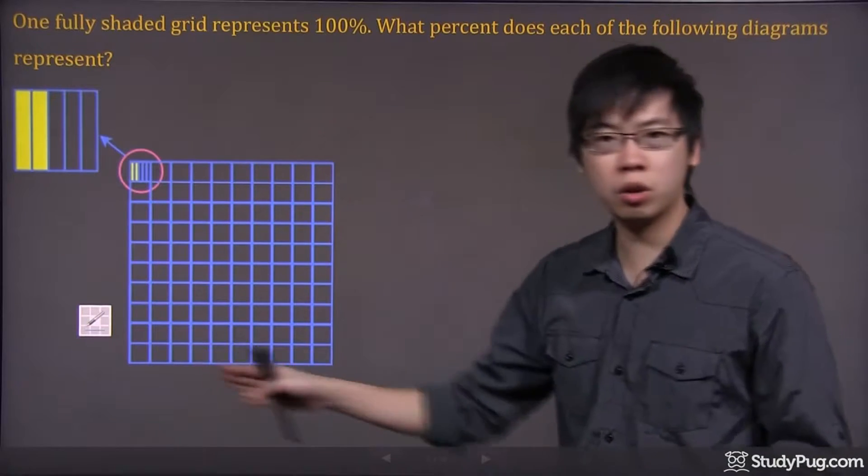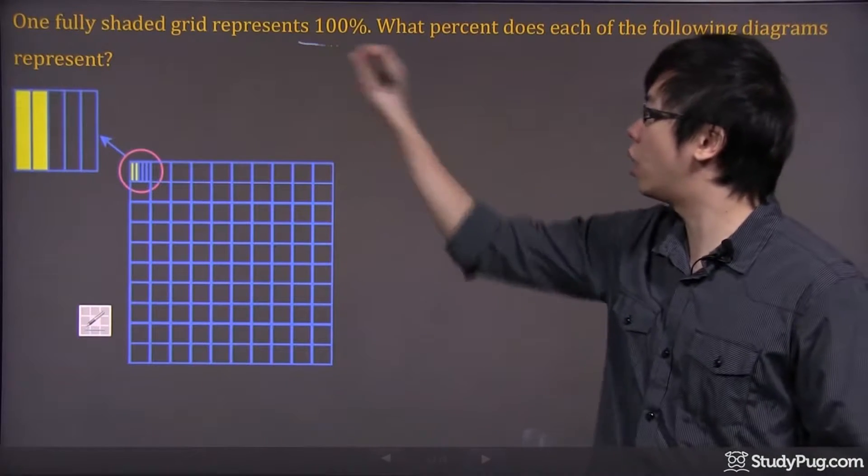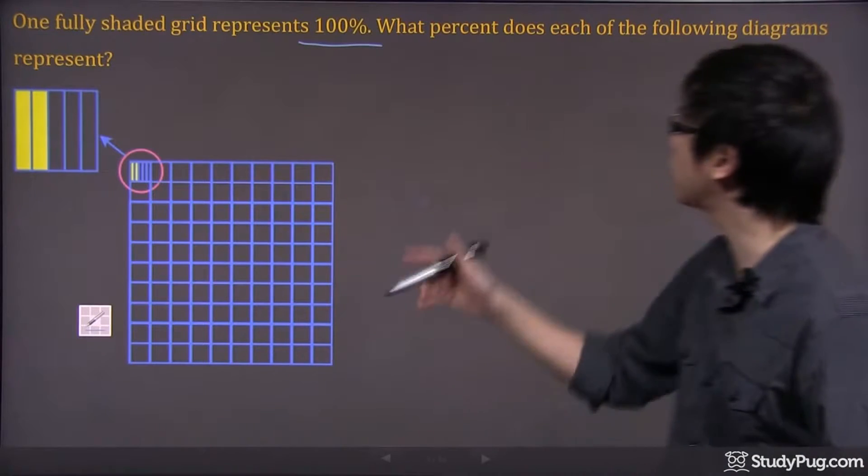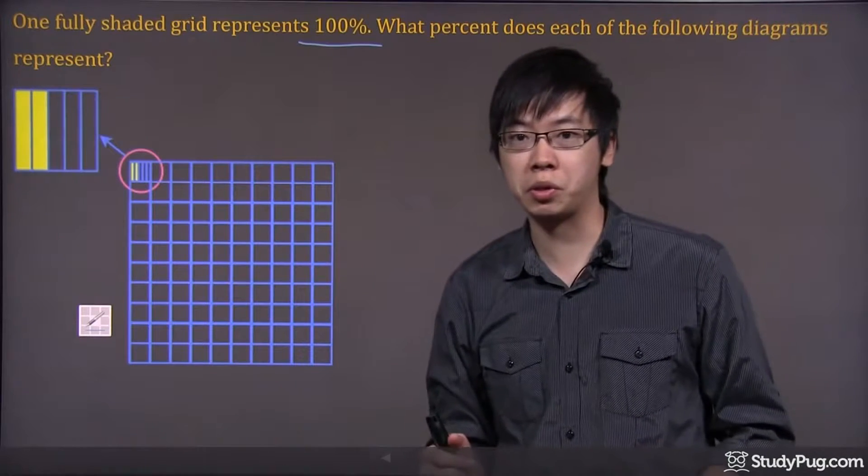We got a fully shaded grid right here that represents 100%. So basically it means there's 100 boxes right here. What percent does each of the following diagrams represent?